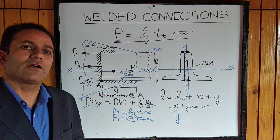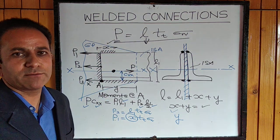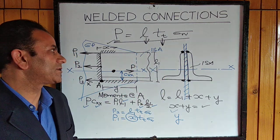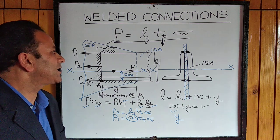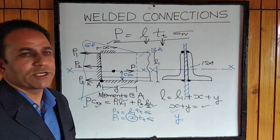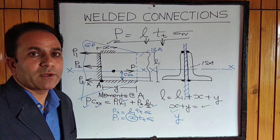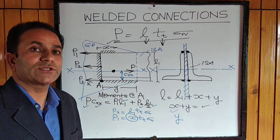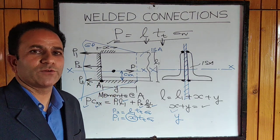In welded connections we have a single formula for calculating strength. The load is known, throat thickness depends on the weld type, permissible stress is known, and we calculate the effective length. Distribution depends on the number of sides, any lap length limitations, and economy. If the member is symmetrical, the length is evenly distributed above and below the axis. If unsymmetrical, the moment-based procedure must be followed for distributing the weld length.